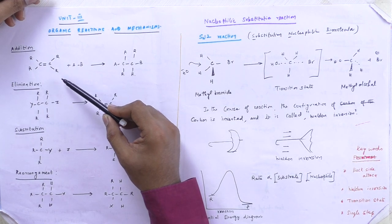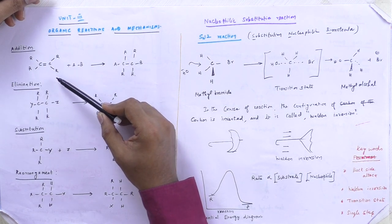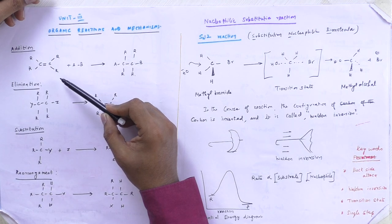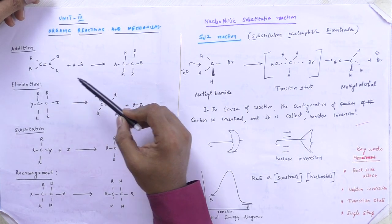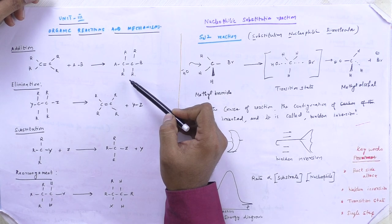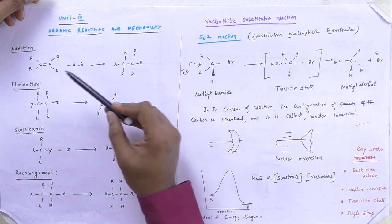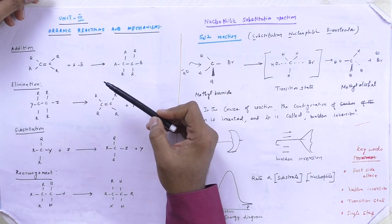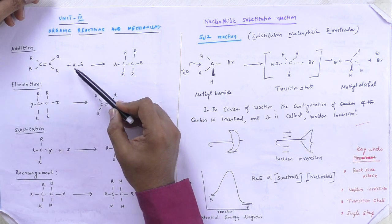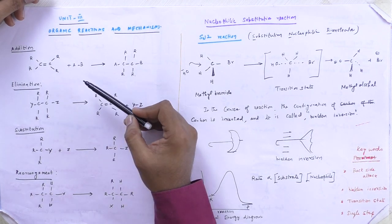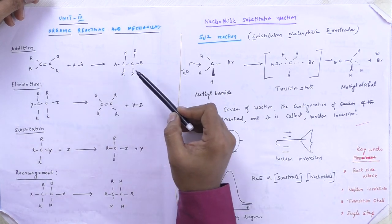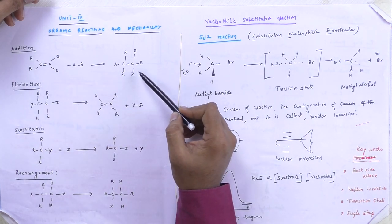First is addition reaction, which is carried out only in an unsaturated compound — that is, a double-bonded compound. When the unsaturated compound is converted into a saturated compound, it is called an addition reaction. When a group binds to the unsaturated compound, the product is formed accordingly.